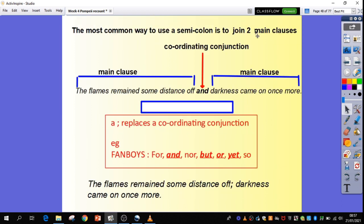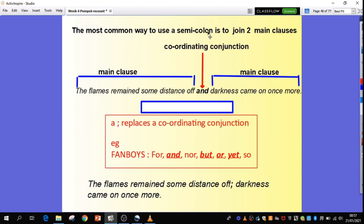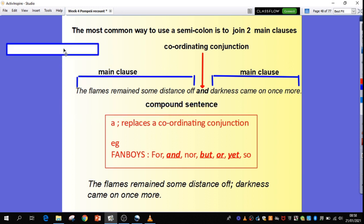So, looking at the use of semicolons, the most common way to use a semicolon is to join two main clauses together. We have here our main clause, the flames remain some distance off, and another main clause, darkness came on once more. And we have our coordinating conjunction and, as you quite rightly identified, it is a compound sentence. Remember, a coordinating conjunction, we use the acronym FANBOYS to remember all the coordinating conjunctions that there are. So, I've taken out the and and I've used my semicolon to replace it. The flames remain some distance off; darkness came on once more.